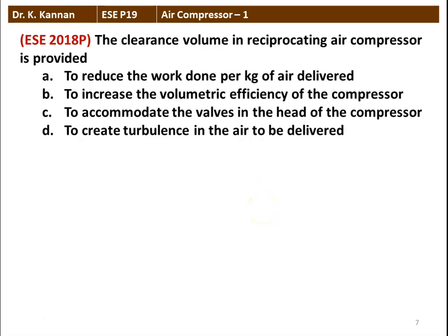The next question from the 2018 question paper: The clearance volume in a reciprocating air compressor is provided to reduce the work done per kg of air delivered, to increase the volumetric efficiency, to accommodate the valves in the heads of the compressor, or to create turbulence in the air. The correct option is to accommodate the valves in the heads of the compressor — that is the main reason for providing clearance volume.